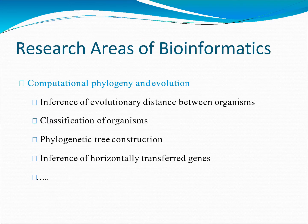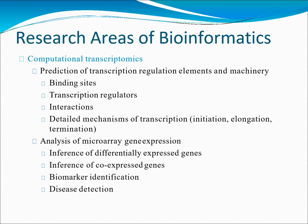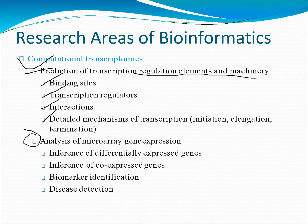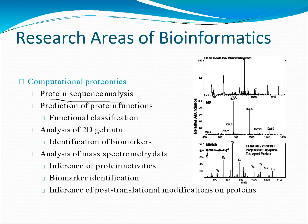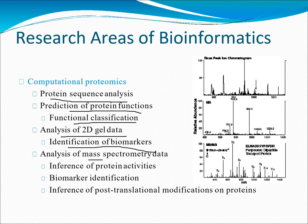Computational genomics also covers transposable elements, simple and complex repeats, prediction of gene function, and comparative genome analysis. In computational phylogeny and evolution, topics include inference of evolutionary distance between organisms, organism classification, phylogeny tree construction, and influence of horizontal gene transfer. In computational transcriptomics, we have prediction of transcription regulation elements, transcription regulator interactions, and the detailed mechanism of transcription. For microarray gene expression analysis, this includes inference of differentially expressed genes, co-expressed genes, and biomarker identification.